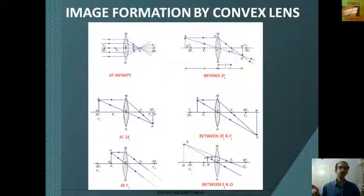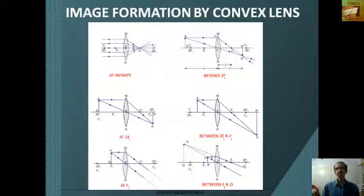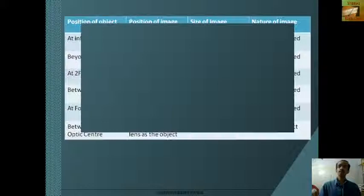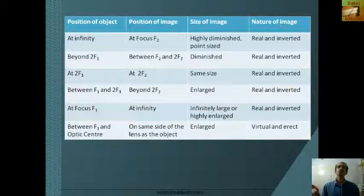When an object is kept at focus F1, then the image formed is at infinity and is infinitely enlarged. These cases are summarized in a table showing position of object, position of image, size of image, and nature of image.